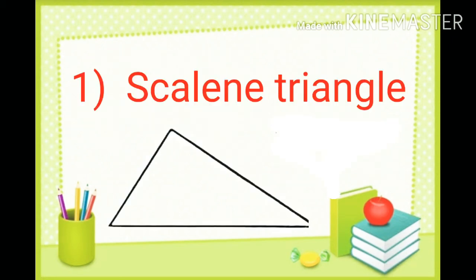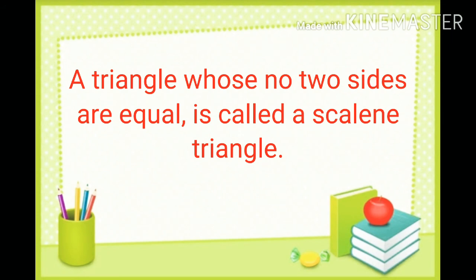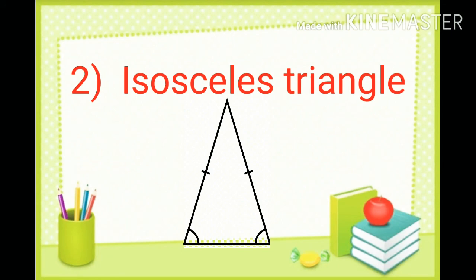The first type is a scalene triangle, which means a triangle whose no two sides are equal is called a scalene triangle.